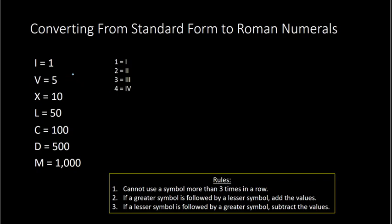Five is just the letter V. For six, we put the letter V with an I — V followed by I is six, because the V is five followed by a lesser symbol one, so we add the values: five plus one is six. For seven we add another I at the end: VII, five plus one plus one equals seven. For eight we add a third I: VIII. For nine we cannot put four I's, so we use the letter X for ten and subtract one with the letter I in front: IX means ten minus one equals nine.